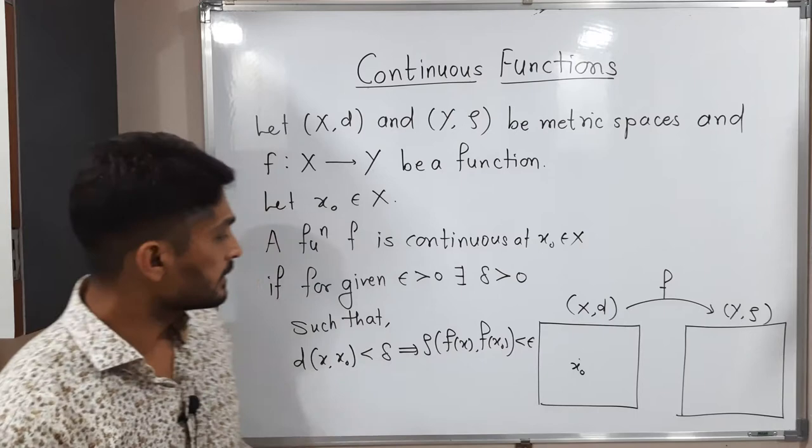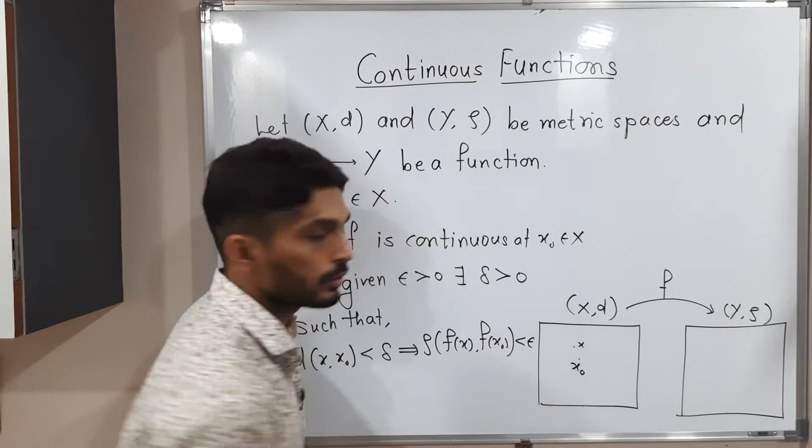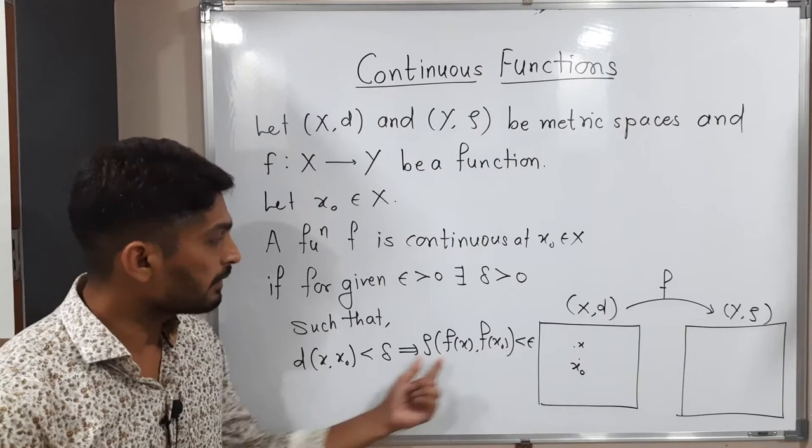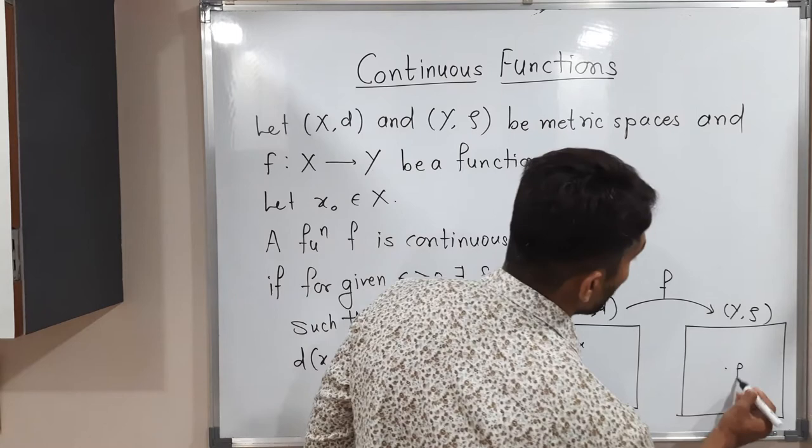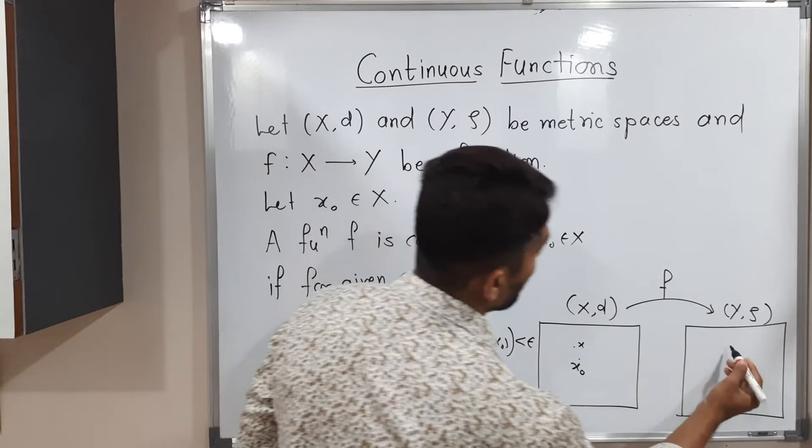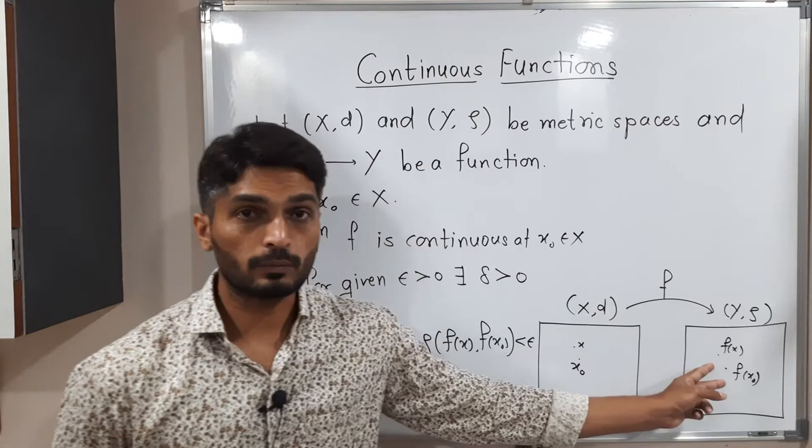When we talk about x and x₀, those are two points in X, so we use metric d. But when we talk about the distance between F(x) and F(x₀) — the images of x and x₀ under F — we find that distance using metric ρ. That is why we write ρ there. This is the definition of continuity.